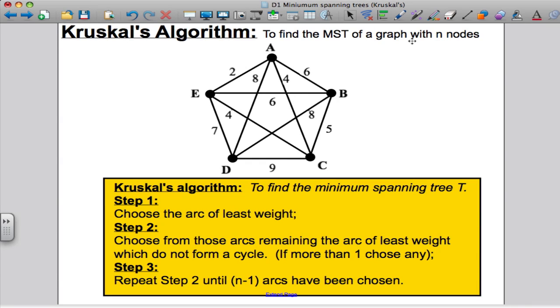Hi there. There is actually another algorithm called Kruskal's algorithm, which can also find the minimum spanning tree of a graph or network with n nodes. Just remind ourselves what a spanning tree was again. A spanning tree is a connected graph that connects all the nodes without any cycles.